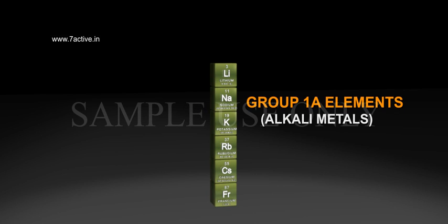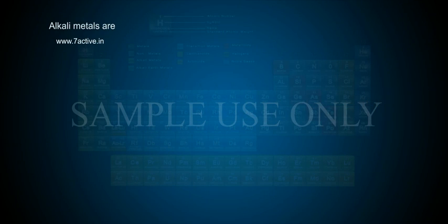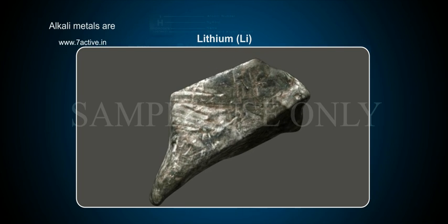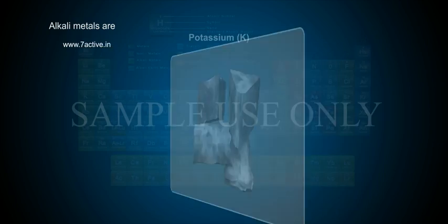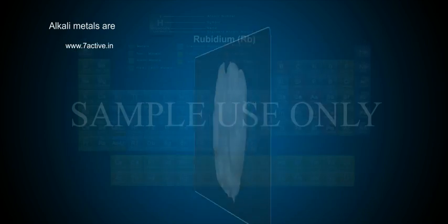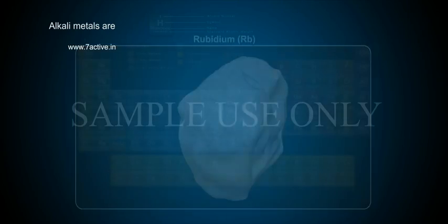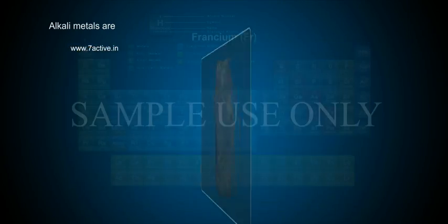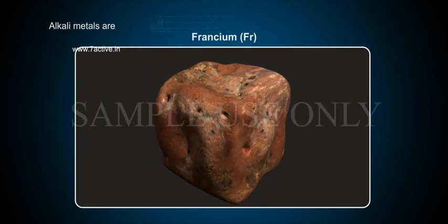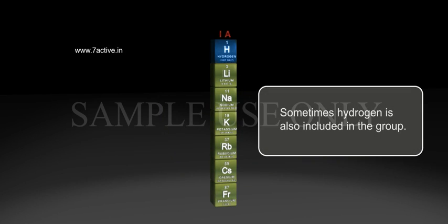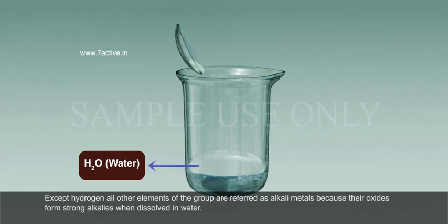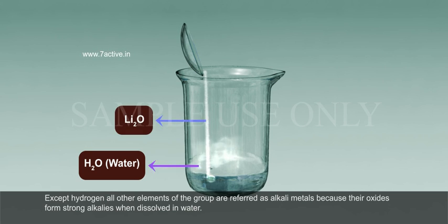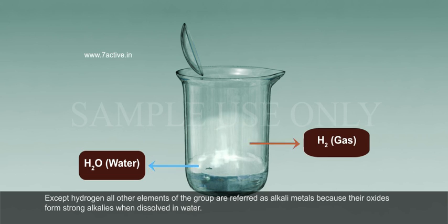In this chapter we will discuss about Group 1A elements, alkali metals. Alkali metals are lithium (Li), sodium (Na), potassium (K), rubidium (Rb), cesium (Cs) and francium (Fr). Sometimes hydrogen is also included in the group. Except hydrogen, all other elements of the group are referred to as alkali metals because their oxides form strong alkalis when dissolved in water.